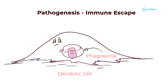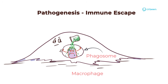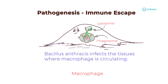Let's continue on to its pathogenesis, starting with immune escape. Once the pathogen is phagocytized by dendritic cells or macrophages, it starts its efforts to escape. Dendritic cells are usually able to kill this pathogen; however, macrophages sometimes cannot. In such cases, the acidification of the phagosome activates the pathogen. As macrophages circulate in the bloodstream and tissues, the pathogen gets many opportunities to cause infection as it escapes from the macrophage.